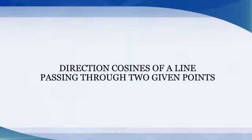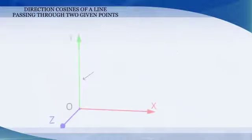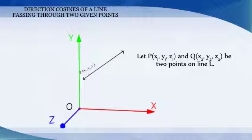Direction cosines of a line passing through two given points. Let P(x₁, y₁, z₁) and Q(x₂, y₂, z₂) be two points on a line L.